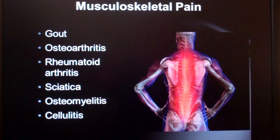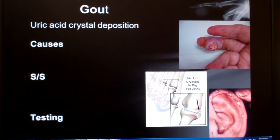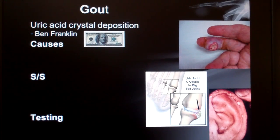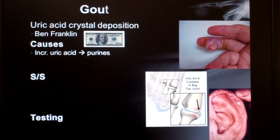Moving on to musculoskeletal pain, we'll briefly visit gout, osteoarthritis, rheumatoid arthritis, sciatica, osteomyelitis, and cellulitis. Gout is the condition where we see someone with a really big, swollen, and very painful first toe, but it's not restricted to just the big toe. Gout is the deposition of uric acid crystals, and they can deposit almost anywhere. Mostly we see patients when the crystals are in a joint because that causes pain, where it might not hurt at all when deposited in the cartilage of the ear - this is called a tophi. Uric acid converts into purines, and this is typically due to a genetic defect causing overproduction of uric acid, though obesity can also be a factor.